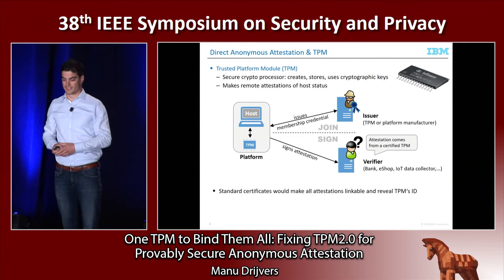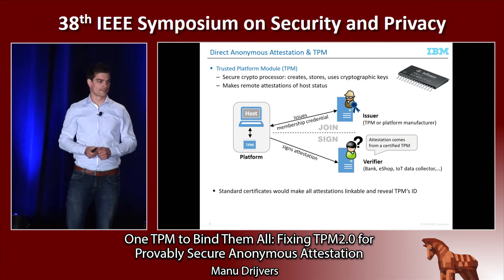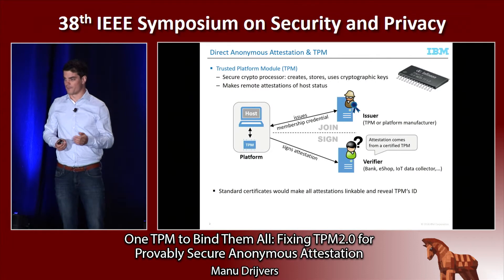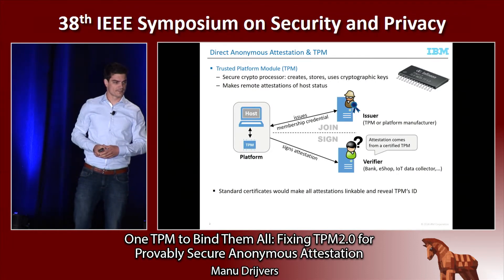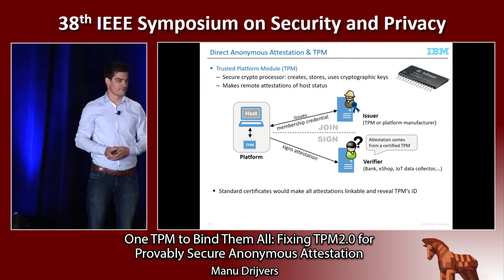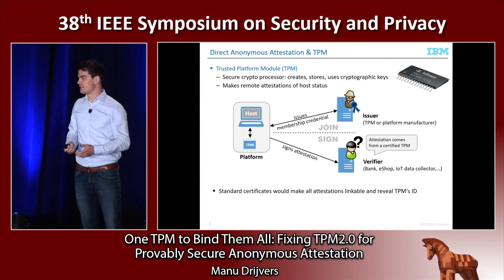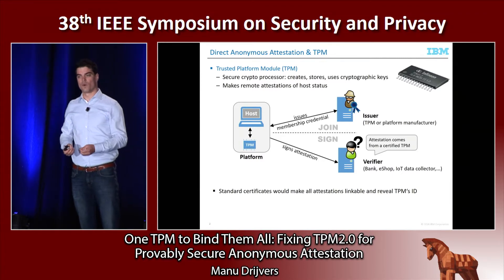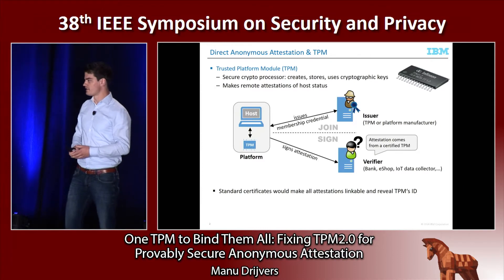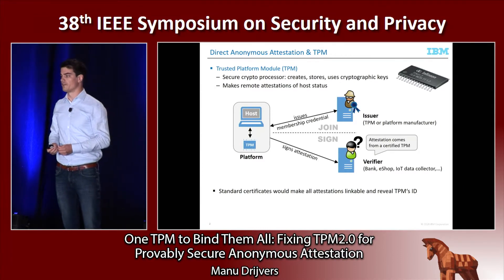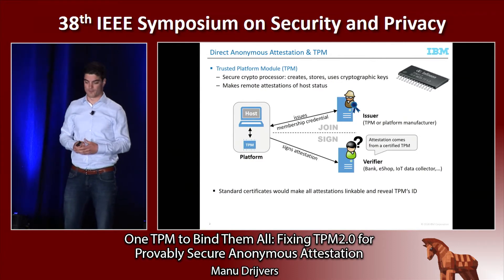For example, you could think of a corporate network where every laptop must first convince the network that it's not running malware before being allowed onto the network. We call this remote attestation, and it's usually a two-phase process. In the first step, the platform — the laptop with TPM — talks to a so-called issuer, some authority, usually the manufacturer of the TPM, that has to do a registration step, issuing some credential. This is a one-time activity, and then the platform can sign such attestations.